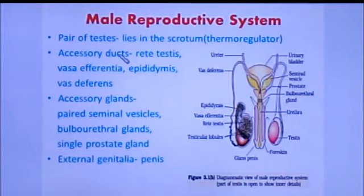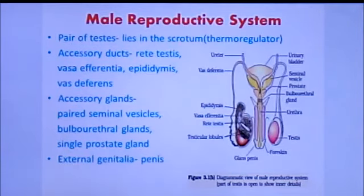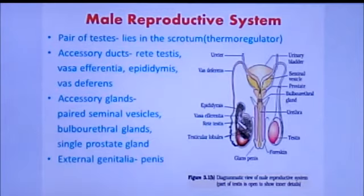The accessory ducts include rete testis. The term 'rete' is used for determining a network, so rete testis refers to where the testes form a network-like structure.